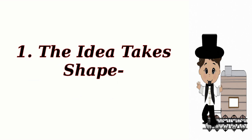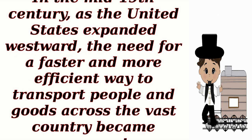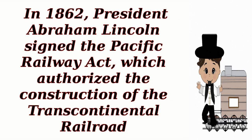The Idea Takes Shape. In the mid-19th century, as the United States expanded westward, the need for a faster and more efficient way to transport people and goods across the vast country became apparent. In 1862, President Abraham Lincoln signed the Pacific Railway Act, which authorized the construction of the Transcontinental Railroad.